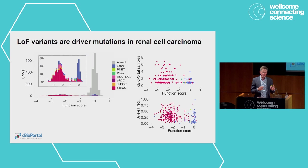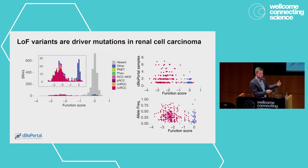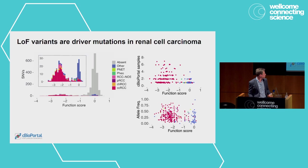To get at whether we're seeing driver effects, we can also use the CBOB portal data to ask how many times a given variant has been seen in cancer — ones that show up repeatedly tend to score lowly. We also looked at allele frequency in tumors based on function score. It's noisy, but there is a significant correlation of lower function scores with higher allele frequencies, suggesting these are genuine drivers.